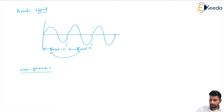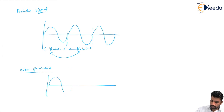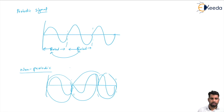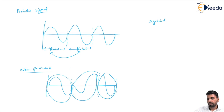Non-periodic means the same pattern is not repeated after each period. The wave is represented one way in one period, and in the next period it is represented differently. After some period of time the same values may or may not be repeated — that means the signal is non-periodic.